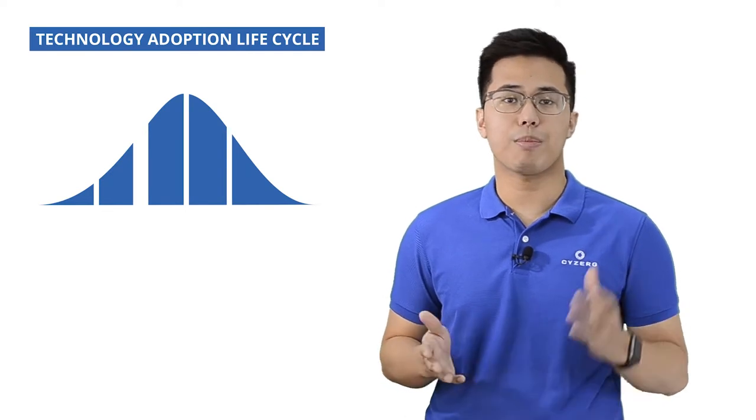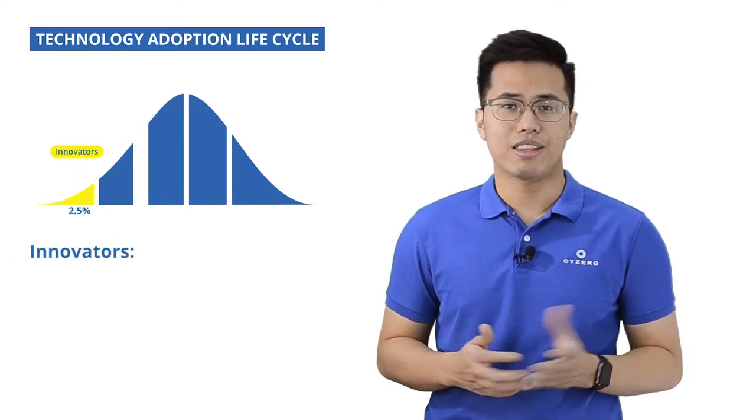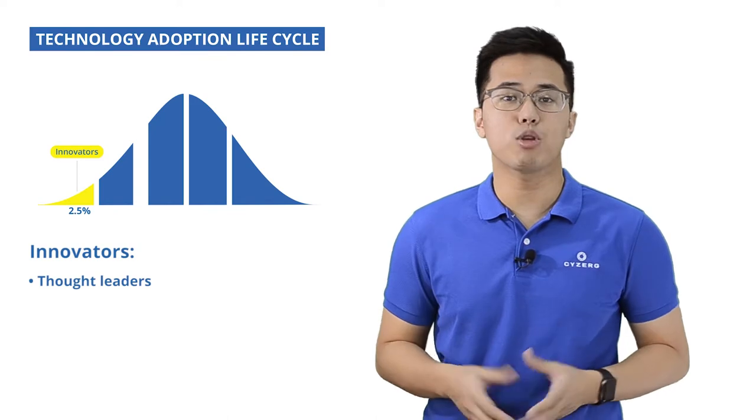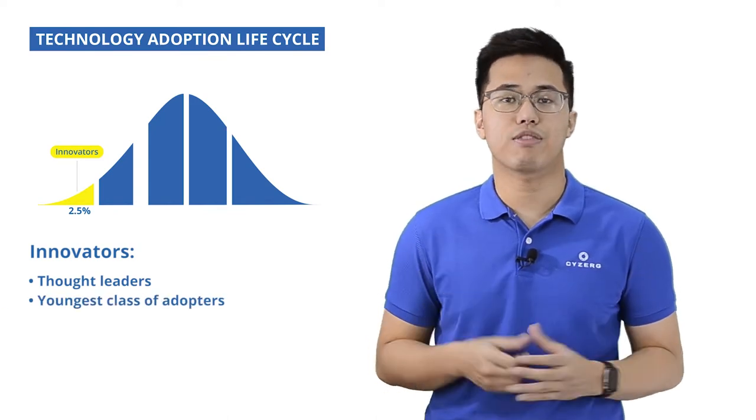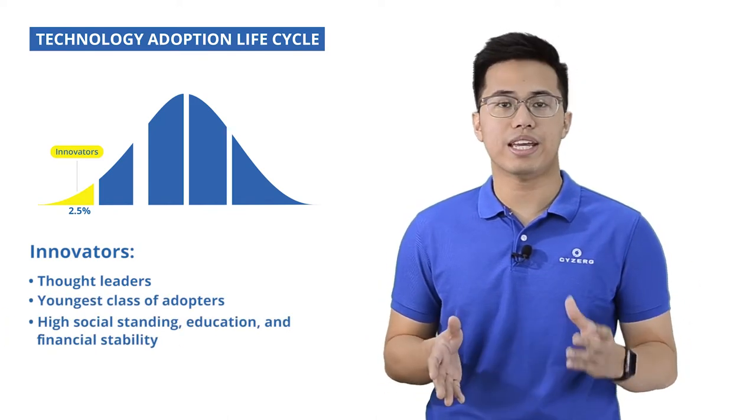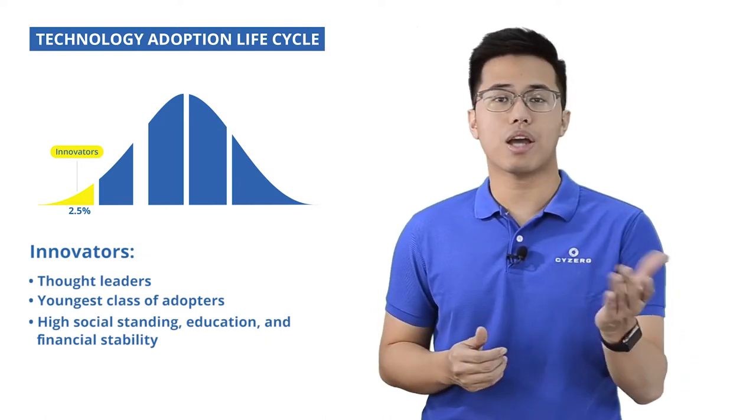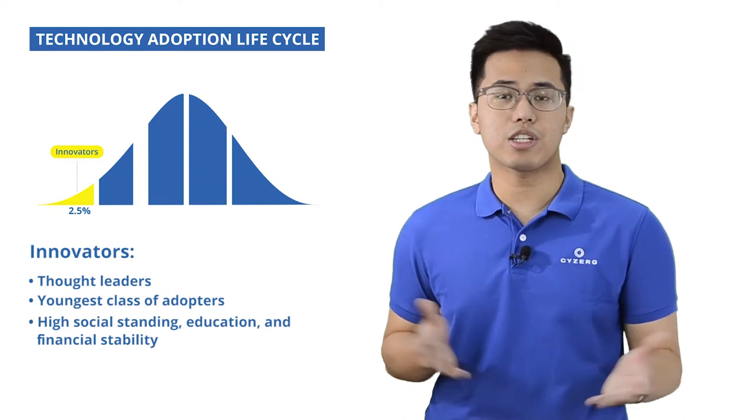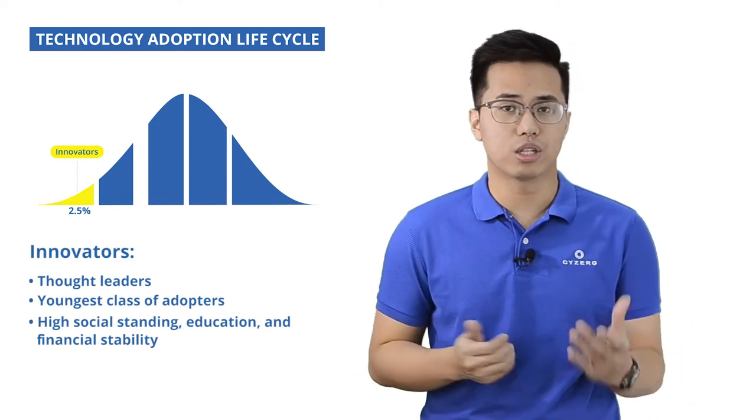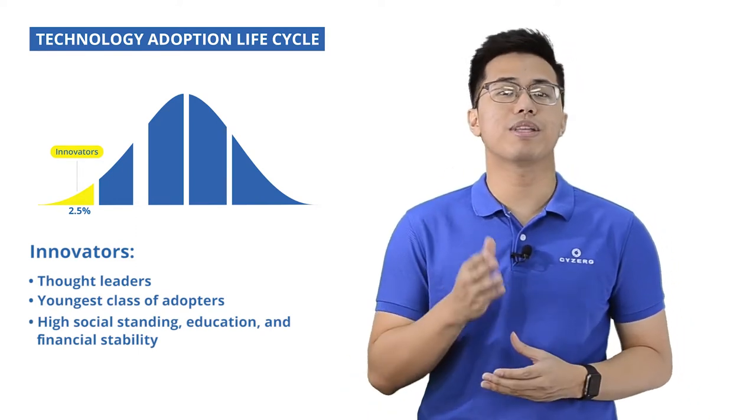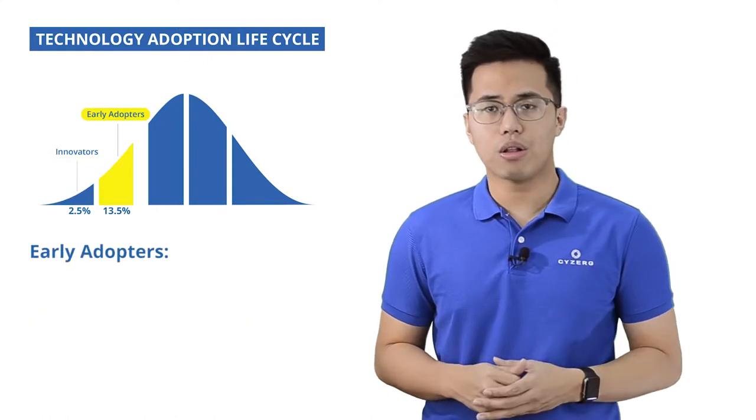The first 2.5% of the population are called innovators. They are the thought leaders, the first to adopt new technology, and the youngest class of adopters. They have extremely high social standing, high education, and high financial fluidity, which explains why they are very open to risks. Even if the technology fails, they can absorb the loss and learn from it. This happens on the ferment stage of the S-curve.